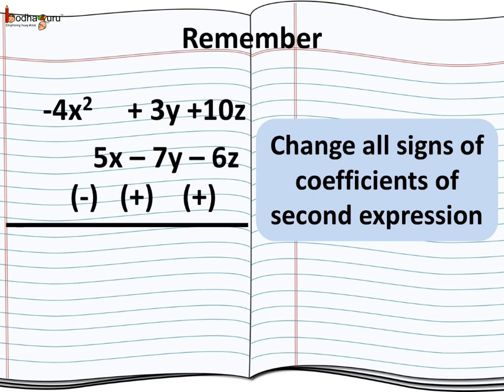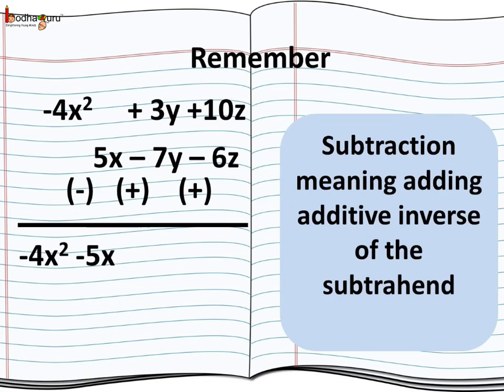Now, we change the signs of the coefficients. 5x doesn't have any like term, but its sign would be changed too. As the additive inverse of 5 is minus 5, now we do the addition. Minus 4x square has no like term and it remains unchanged. Also, minus 5x remains unchanged too.